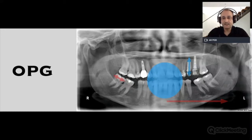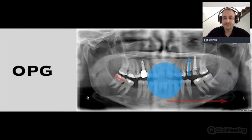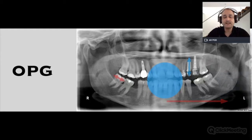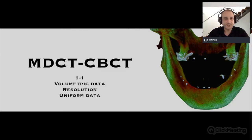The OPG has a magnification factor of roughly 25%, with a bone error distortion of about 0.3%, which increases as we go more distally. It's not reliable in the mesiodistal or horizontal dimension, but it is very reliable in the vertical dimension for checking length of teeth or objects. The MDCT and CBCT give us one-to-one volumetric data. The resolution compared to conventional radiography is much higher, and both technologies provide uniform data.